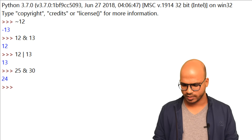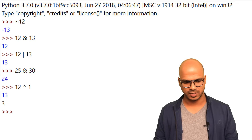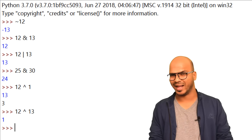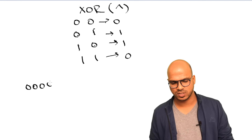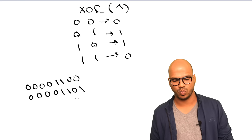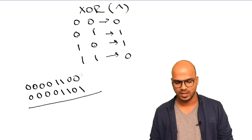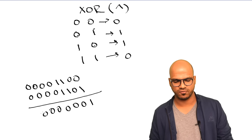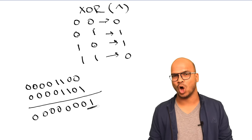Let's take 12 caret 13 — the answer is 1. But why 1? Let's verify. What is 12? 0 0 0 0 1 1 0 0. And 13 is 0 0 0 0 1 1 0 1. Now let's do XOR: if two bits are different, result is 1; if same, result is 0. Comparing bit by bit: the last bits differ so that's 1; all others are same so they are 0. The only answer we get is 1, and that's why we got 1.